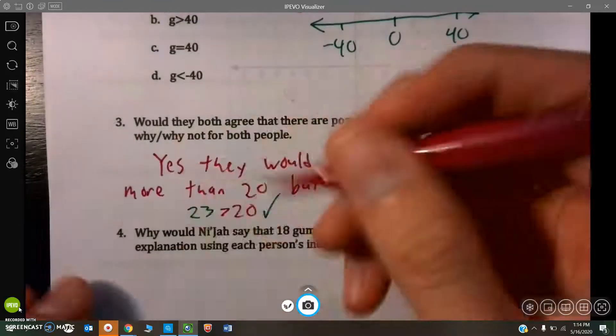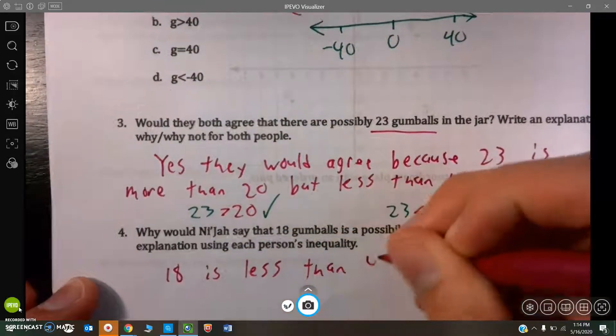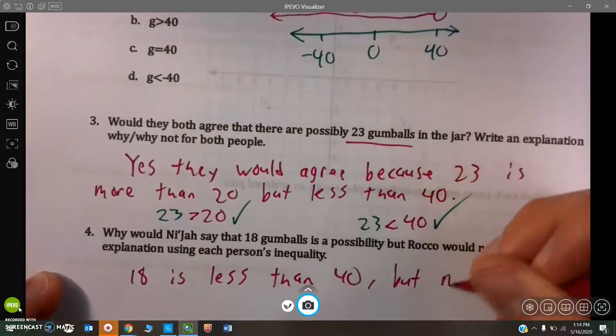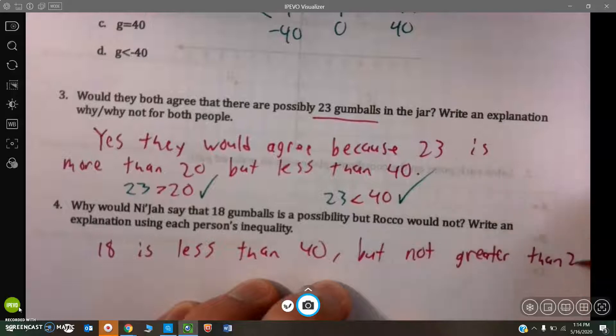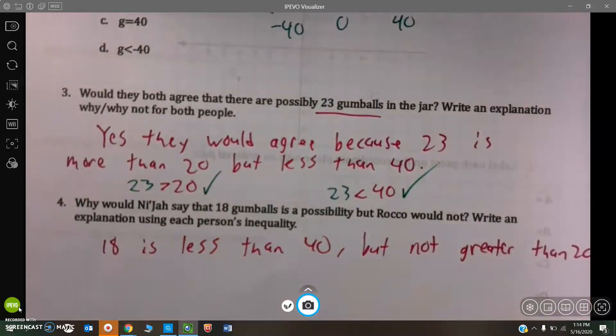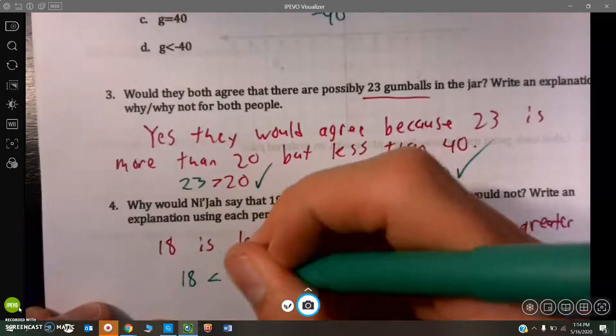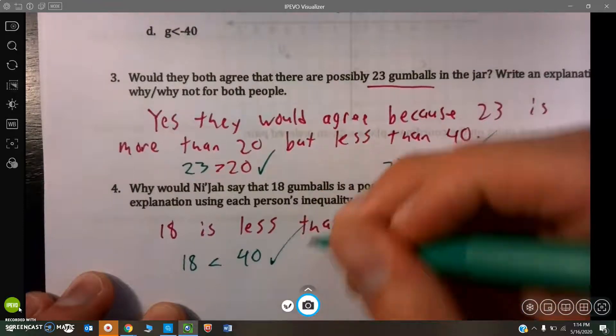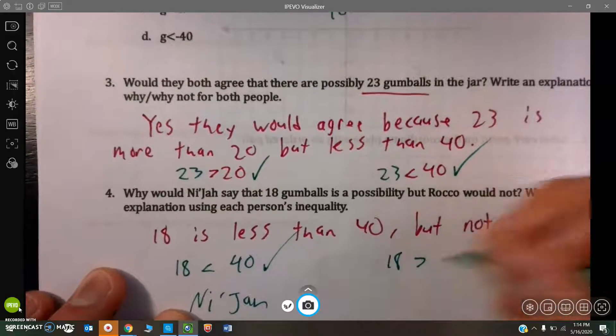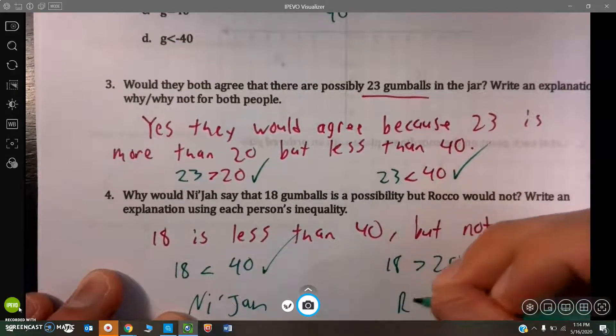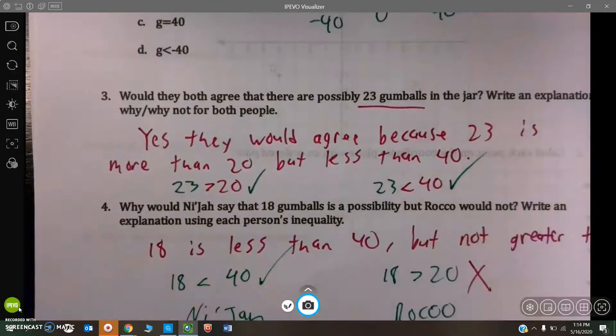Once again, if we take the two inequalities, 18 less than 40 for Niza, true. And then 18 is greater than 20 for Rocco, and that is not true. So, he would not agree with that statement.